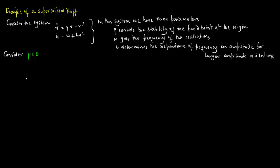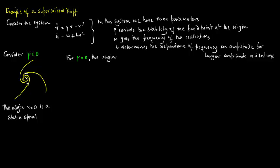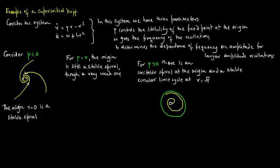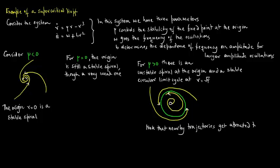For mu less than 0, the origin r equals 0 is a stable spiral. For mu equals 0, the origin is still a stable spiral, though a very weak one. For mu greater than 0, there is an unstable spiral at the origin and a stable circular limit cycle at r equals the square root of mu. Note that nearby trajectories get attracted to the limit cycle.